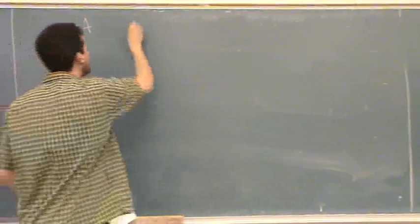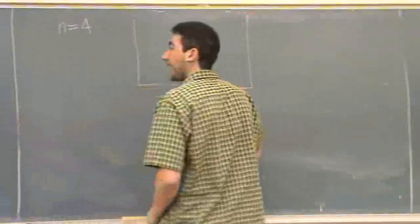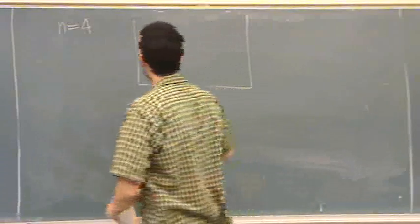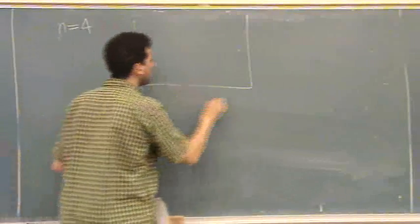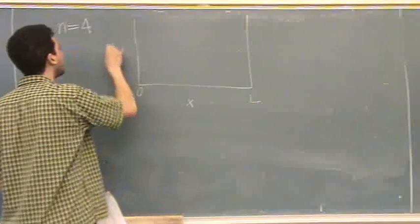All right. We have an n equals 4 wave function. Let's draw that out. It's basically asking about the nodes. So, 0 to L, it's an x-axis, this is ψ.